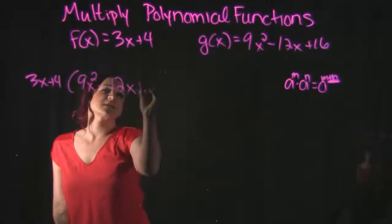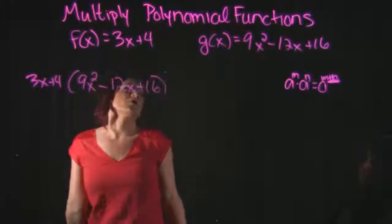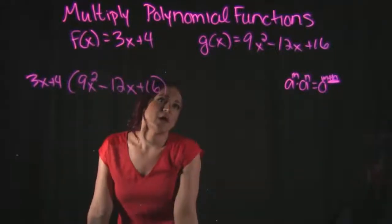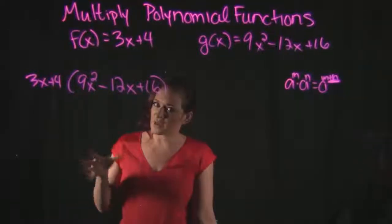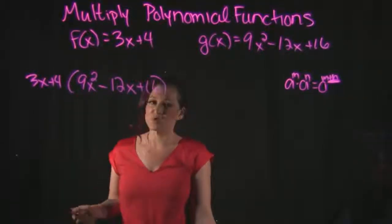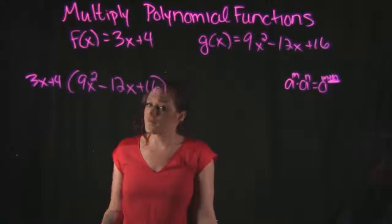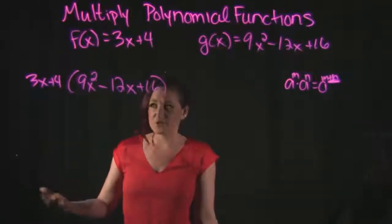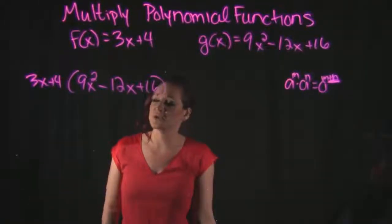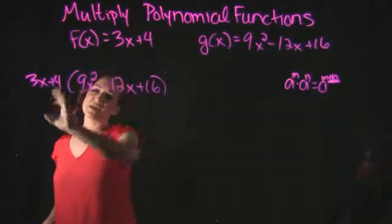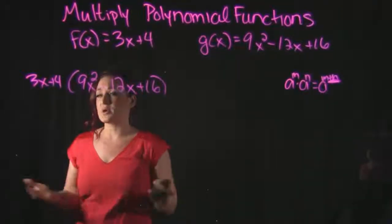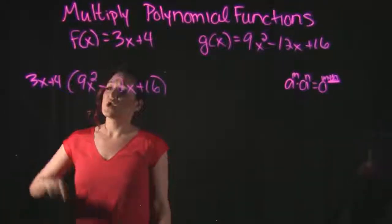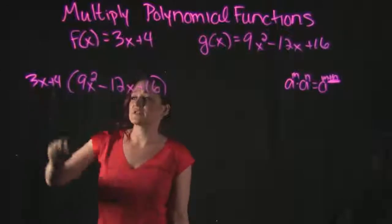There are several techniques out there: the FOIL method, the BOX method, the vertical method — there are a bunch of different techniques on how to multiply polynomials together. One of the first that most people learn is the distributive property, and that's what I'm going to use here. The distributive property says that if I'm taking this binomial multiplying it times this trinomial, I'm going to apply the distributive property twice — once for each term in the first polynomial.